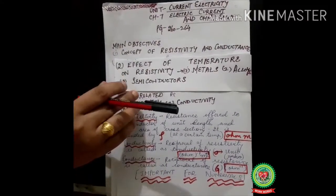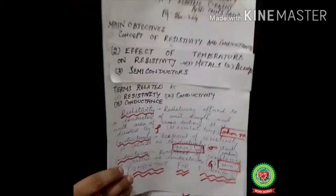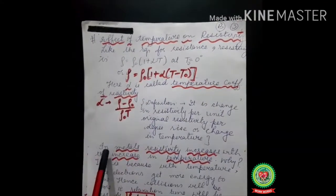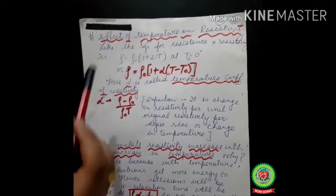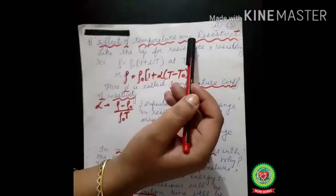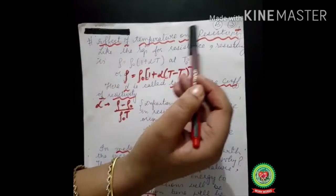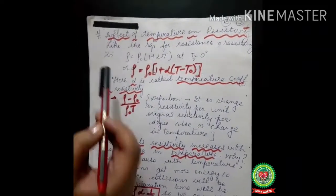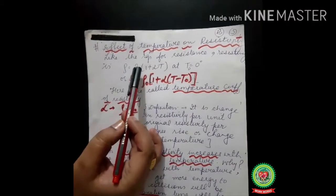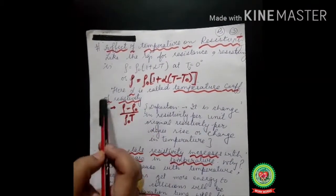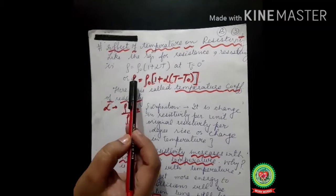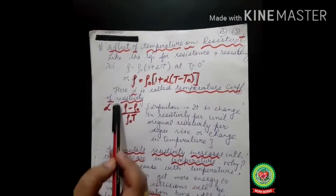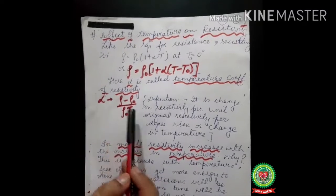Now let's shift towards the next topic: effect of temperature on resistivity. This is a very important topic. Just as we have done the effect of temperature on resistance, similarly we write rho instead of R. So the answer we get is: rho equals rho-naught times (1 + alpha times (T minus T-naught)).